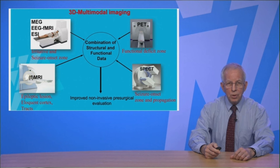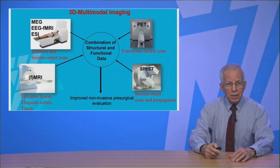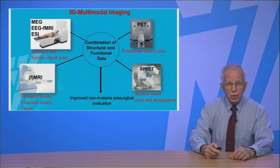In 3D multimodal imaging, the idea is to register all imaging modalities. You can register MRI with the epileptic lesion, fMRI with eloquent cortex, DTI with the tracts, MEG, ESI (epileptic source imaging), fMRI, then the PET and the SPECT data. The idea is that the combination of structure and function within one image will improve the non-invasive presurgical evaluation.